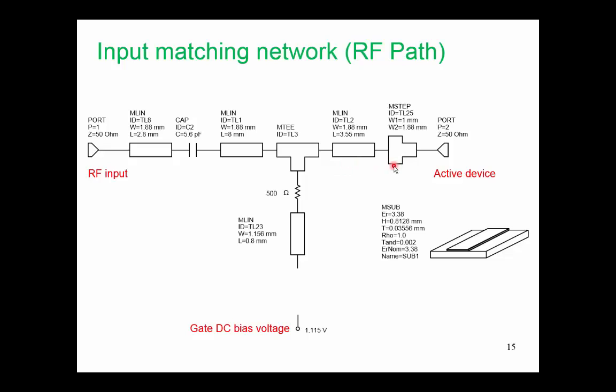Another 50 ohm line, and then a step in width as we connect to our transistor. So this one millimeter is the width of the tab. Remember, this is not the same transistor that I used for illustration purposes up front, that LDMOS transistor. This is a gallium nitride transistor, and the tab is a different width.